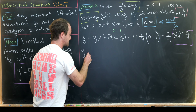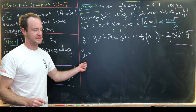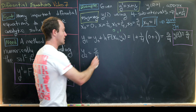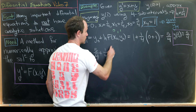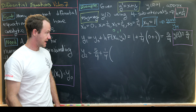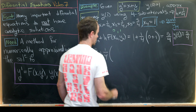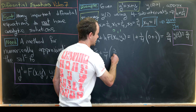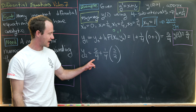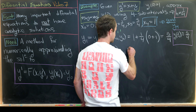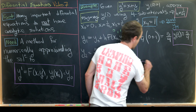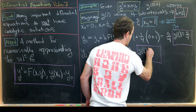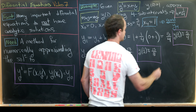Next, y2 = y1 + h·f(x1, y1) = 5/4 + (1/4)·f(1/4, 5/4). Since f(1/4, 5/4) = 1/4 + 5/4 = 6/4 = 3/2, we get y2 = 5/4 + (1/4)·(3/2) = 5/4 + 3/8 = 13/8. So y(1/2) ≈ 13/8.